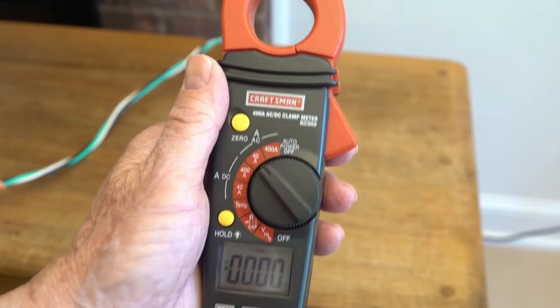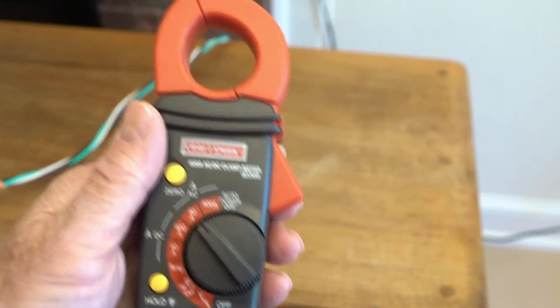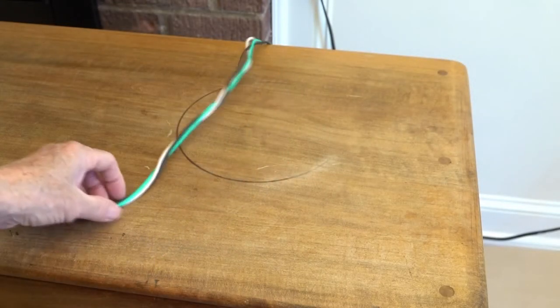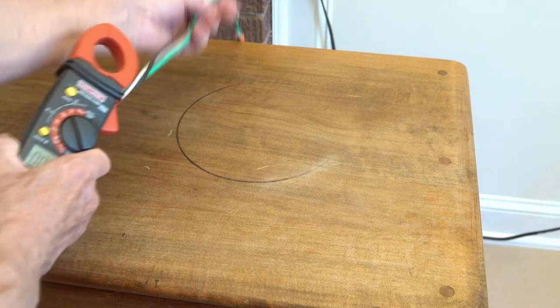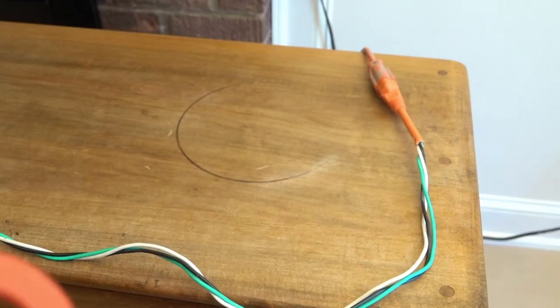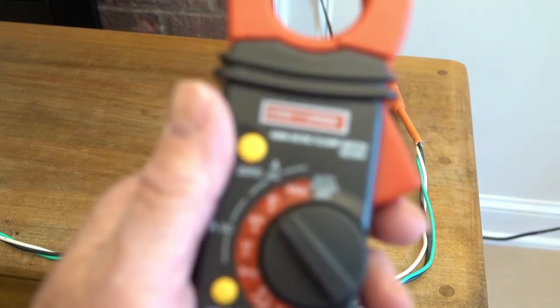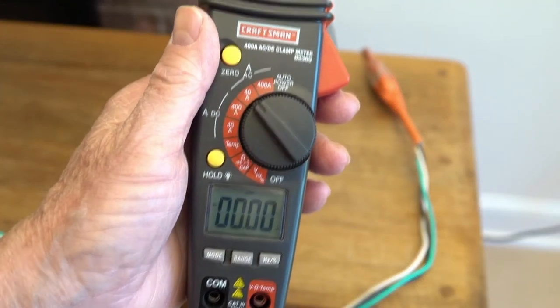But this particular part of it is AC. We've got this short piece of extension cord with the outside insulation stripped off of it so we can get each end of conductors separately. We're going to show you what happens when you measure them.